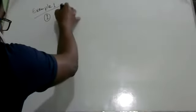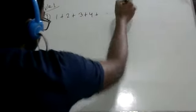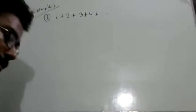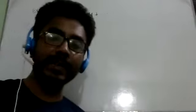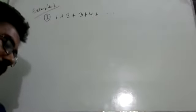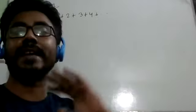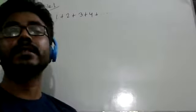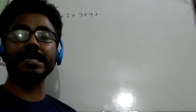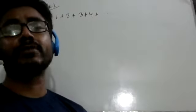Example 1 is equal to 1 plus 2 plus 3 plus 4 plus dot dot dot. This is a sequence. We have already seen that this is actually an arithmetic series. Now, as I am sure you can see, there is a common difference in this arithmetic series.